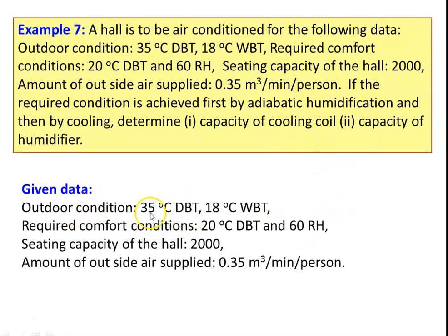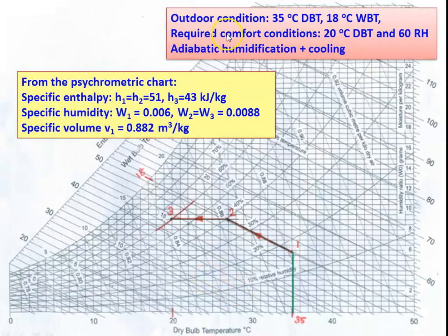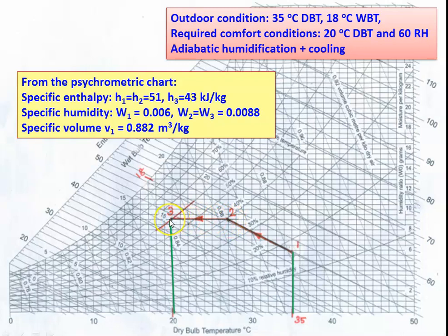Given data: outdoor conditions 35 degree Celsius dry bulb temperature and 18 degree Celsius wet bulb temperature; required comfort conditions 20 degree Celsius dry bulb and 60 percent relative humidity; seating capacity 2000; air supply 0.35 cubic meter per minute per person. On the psychrometric chart, draw a constant enthalpy line from point 1 (outdoor) and a horizontal line from point 3 (indoor) — these meet at point 2. Process 1 to 2 is adiabatic humidification; process 2 to 3 is cooling.